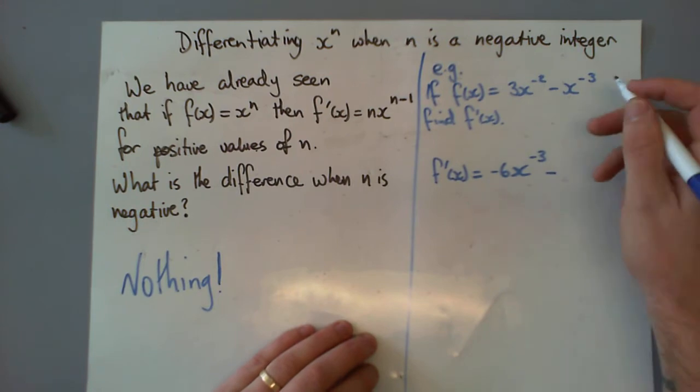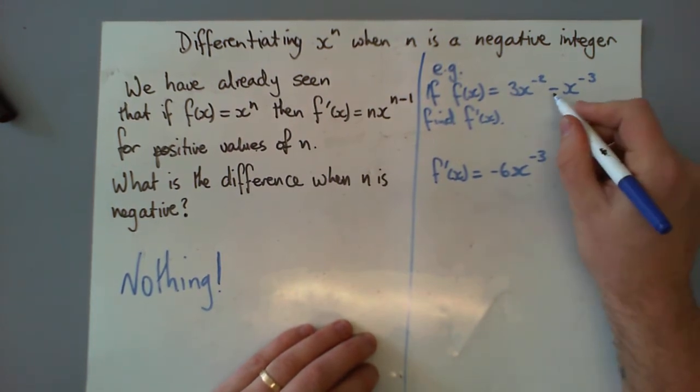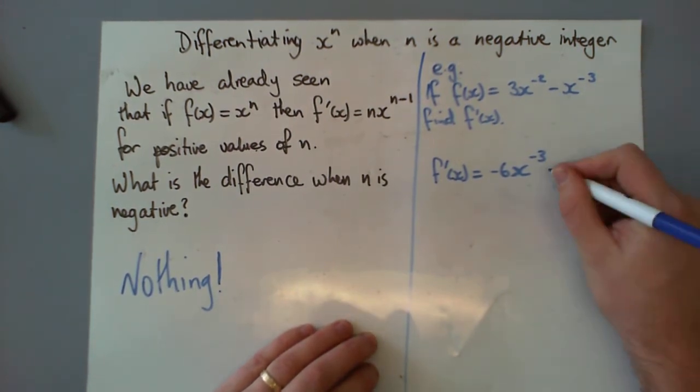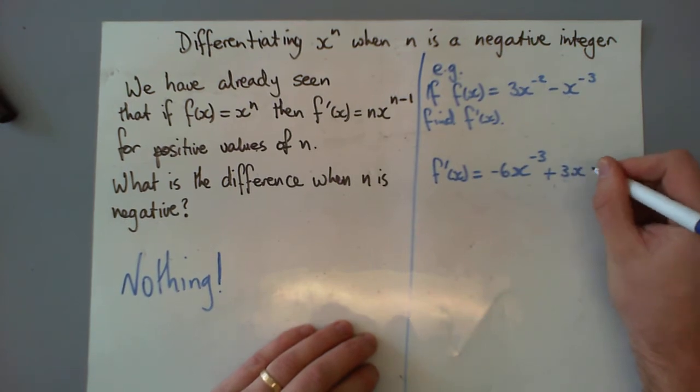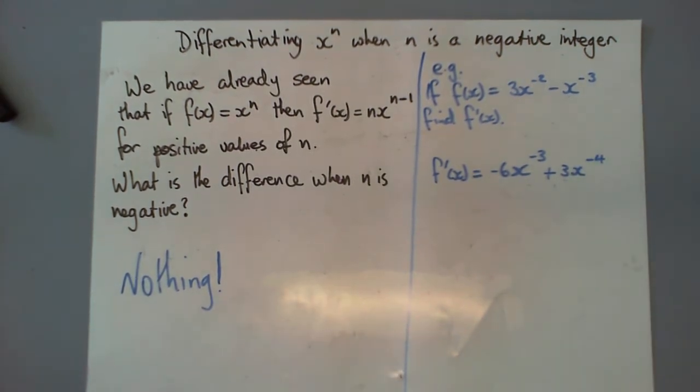Minus negative, sorry, then we've got negative 1 times negative 3 is going to give us positive 3x to the negative 4. So we're still reducing that power down, still reducing that power.